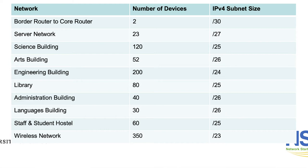For the staff and student hostel you have 60 devices, so you're going to use a /25 which will give you 128 possible devices on the network, which is 126 usable IP addresses. For the wireless network you have 350 devices, which will give you a /23 — that is 512 devices available.